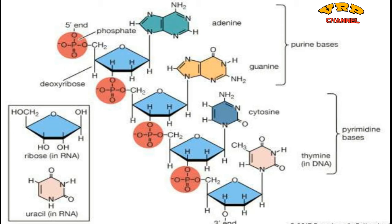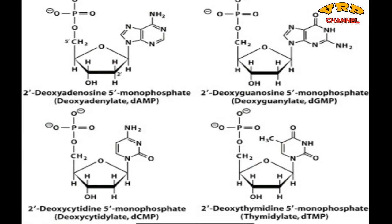Here you can see the nitrogen bases — purines and pyrimidines. Adenine and guanine are purine bases, and cytosine and thymine are pyrimidine bases. There are four different types of nucleotides: adenine, guanine, cytosine, and thymine nucleotides. The name of the nucleotides corresponds with the nitrogen bases they contain.